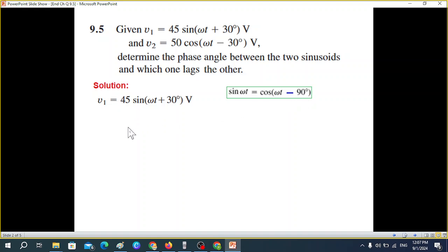To convert sine into cosine we have to subtract minus 90 from the angle. So this will be equal to 45 cos(ωt + 30° - 90°) and solving this we get 45 cos(ωt - 60°). This is the final value in terms of cosine.